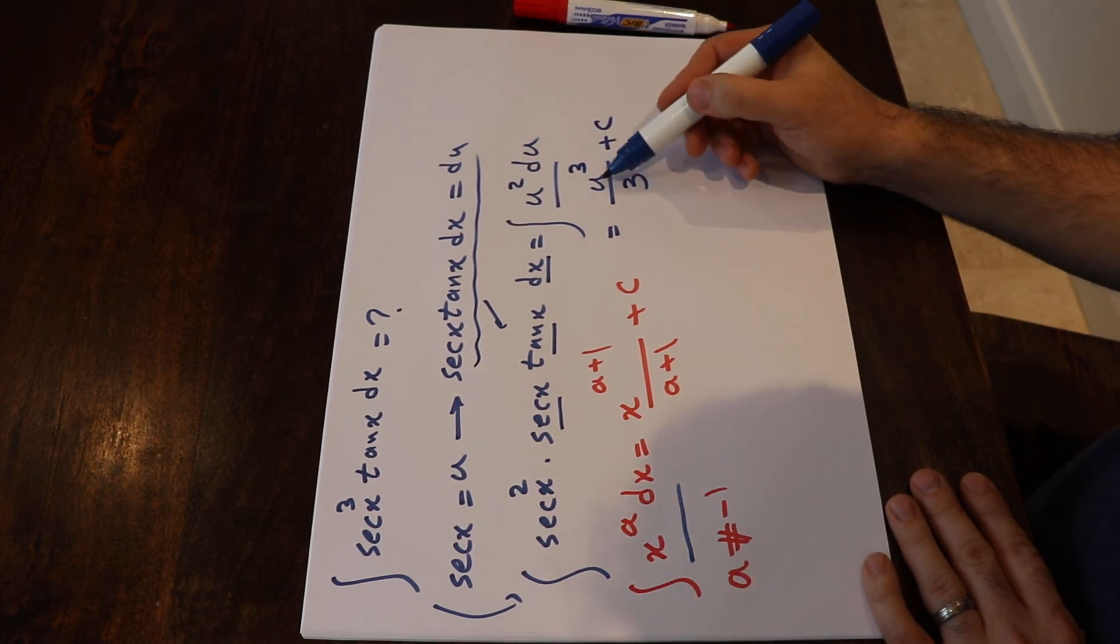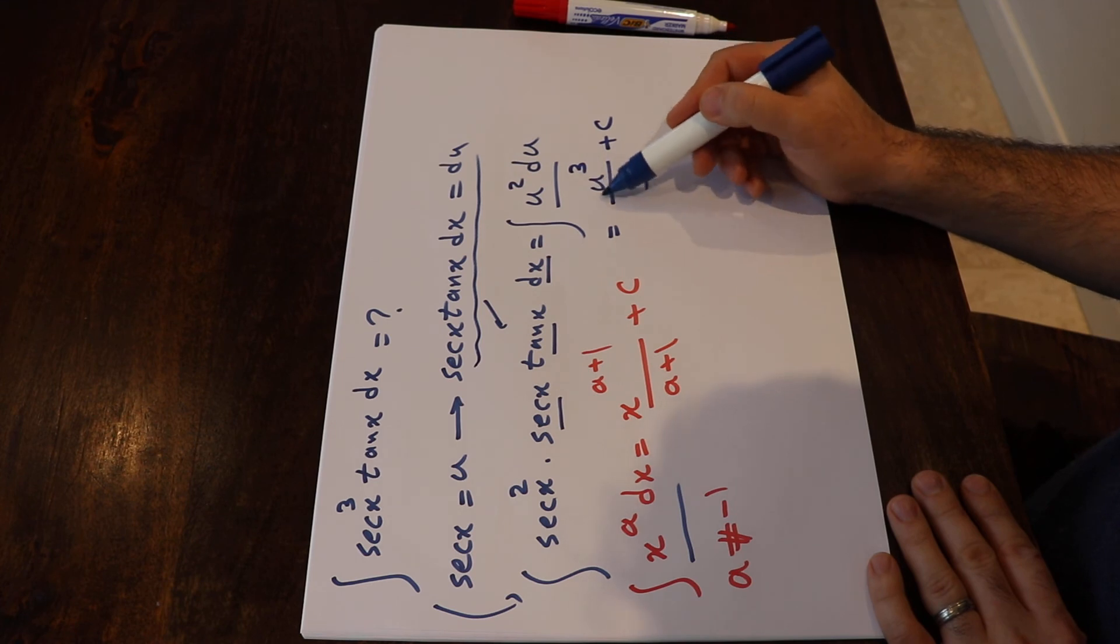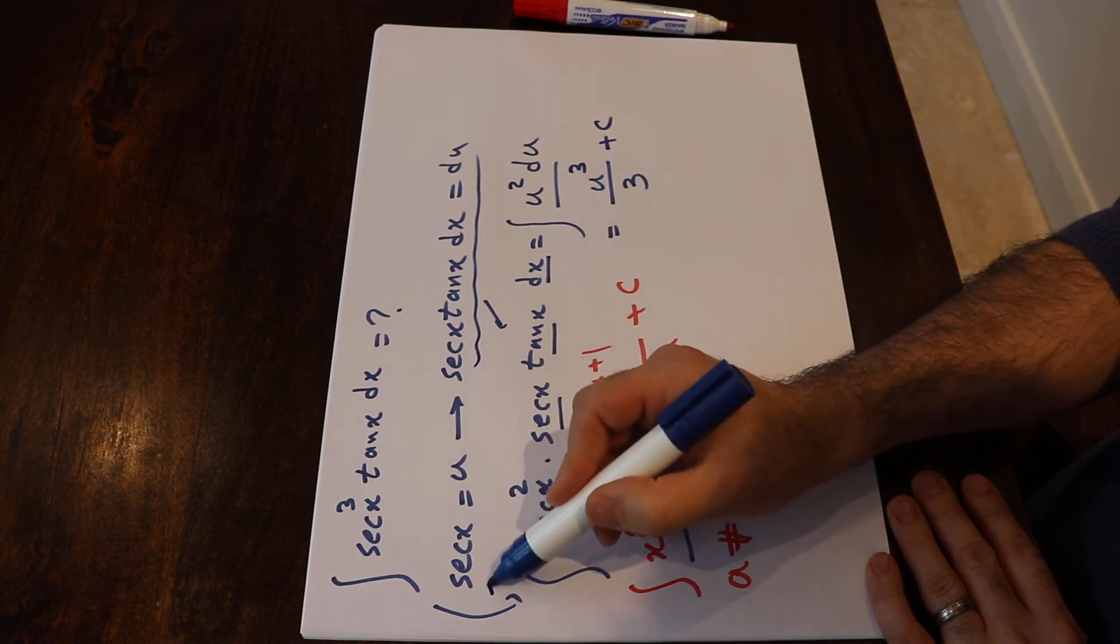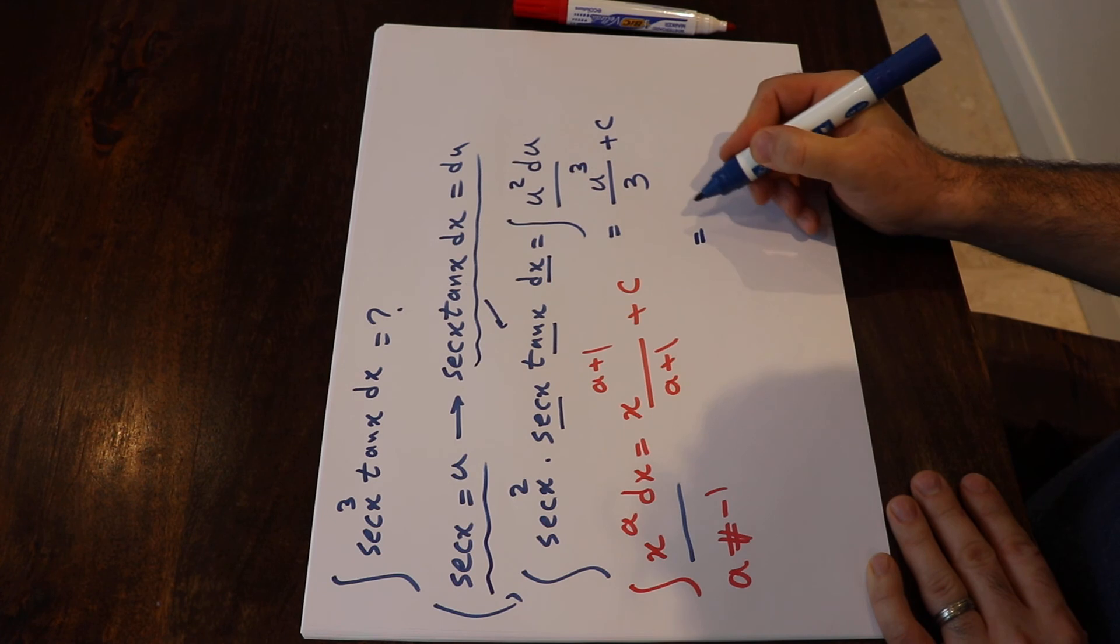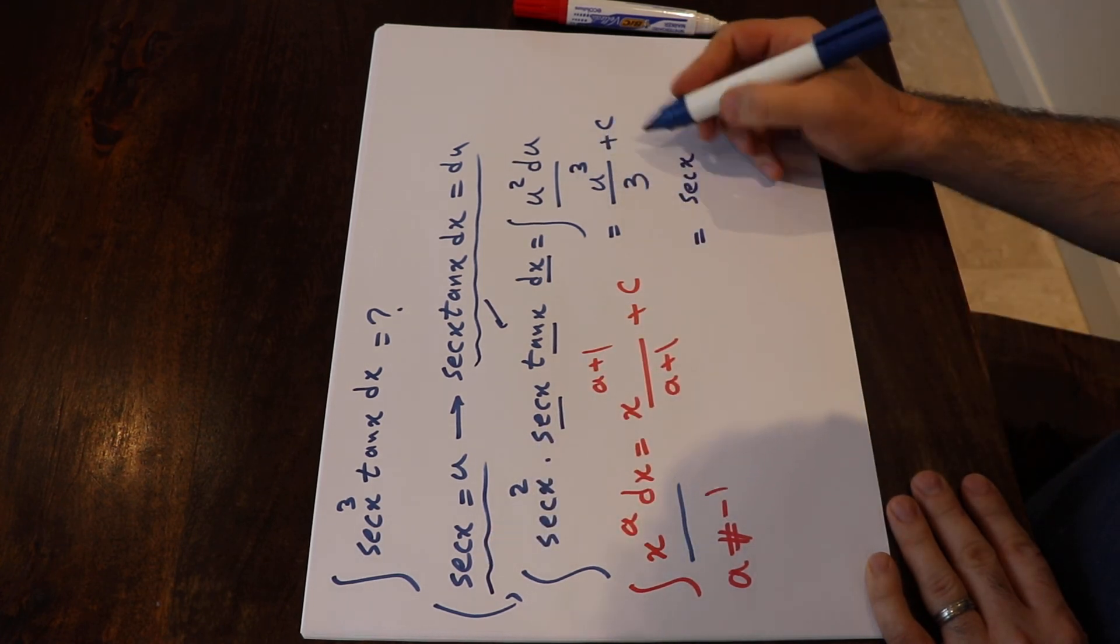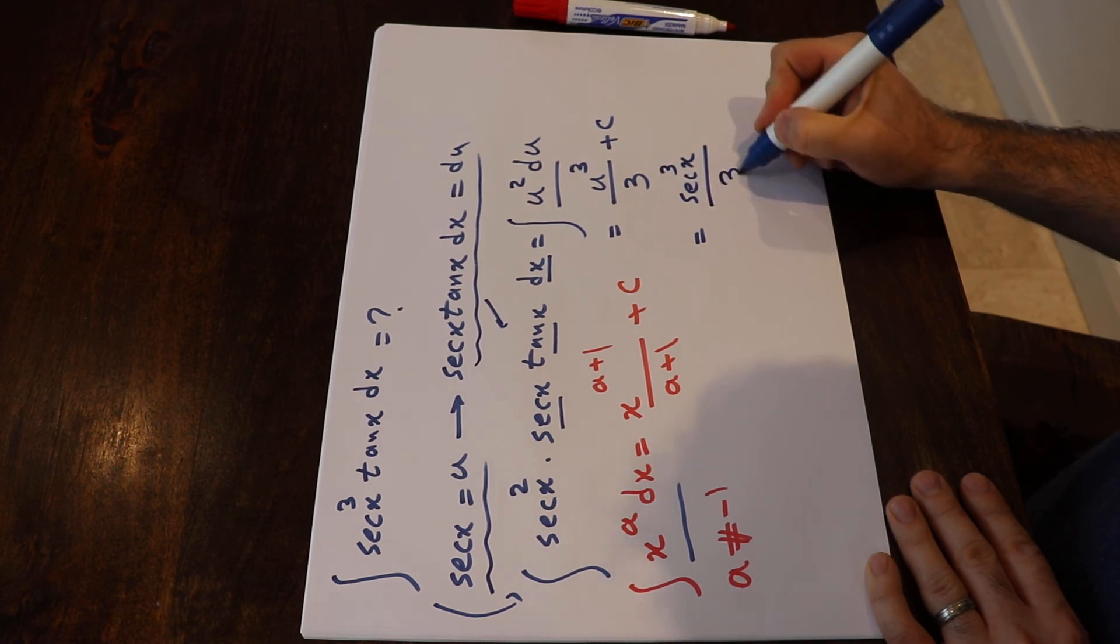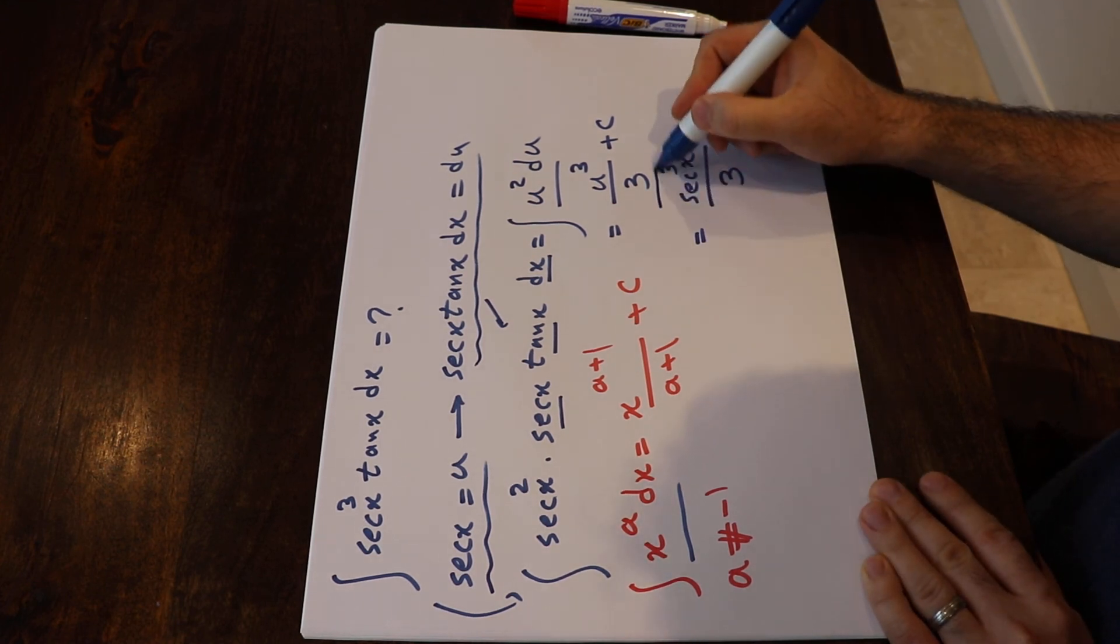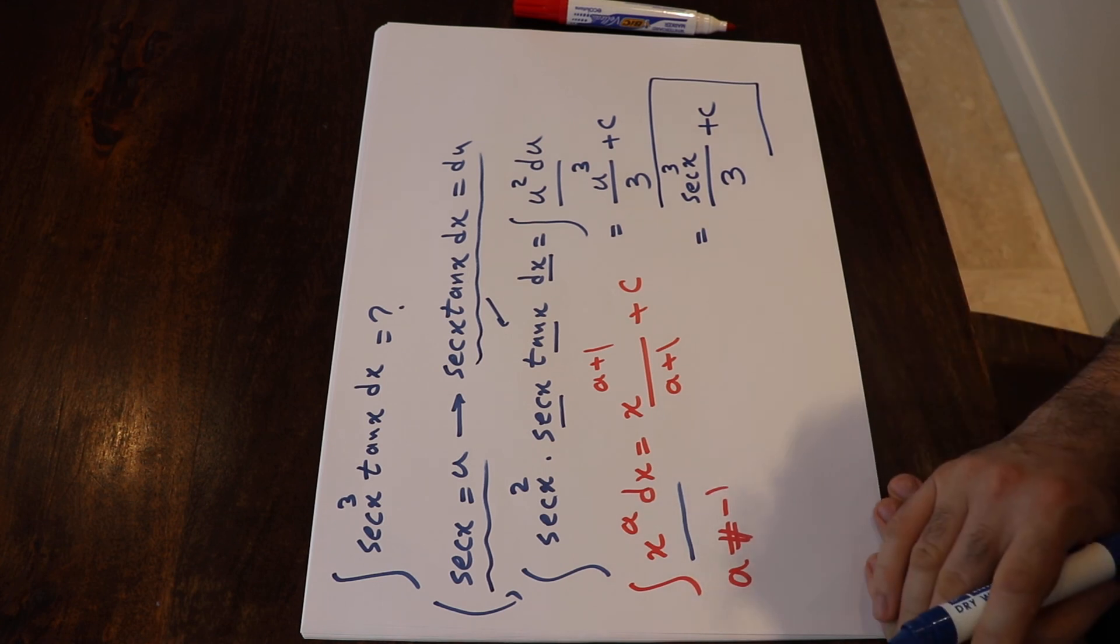All you need to do at this stage is just to substitute the value of u, the parameter u, with this definition you had at the very beginning. So that will be equal to, instead of u I put sec x, that will be with the power of 3 divided by 3 plus c, and that is the solution to this integral.